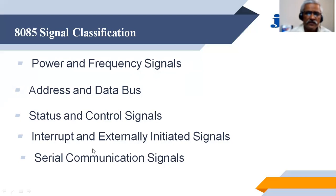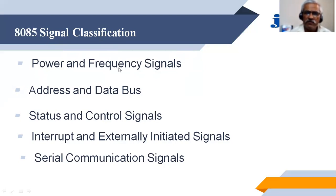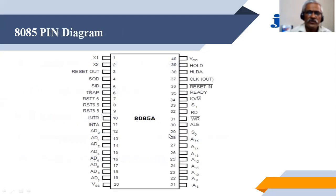Data may come in parallel — that is through the data bus — or data can be received one bit at a time, that is serially over the serial communication interface. So 8085 signals are classified into these five classifications: power and the frequency signals, address and the data bus signals, the status and the control signals, interrupt and externally initiated signals, and the serial communication signal.